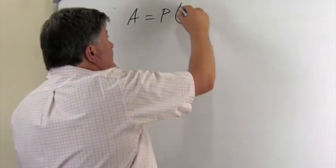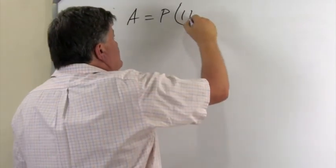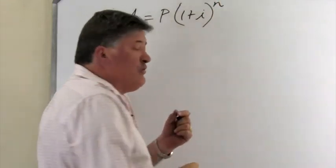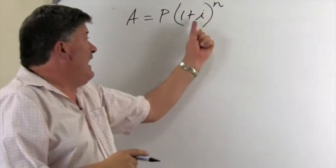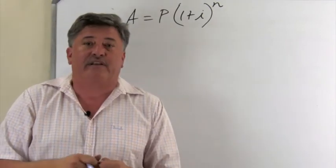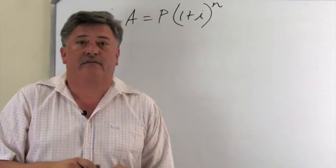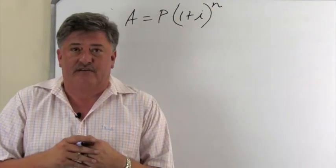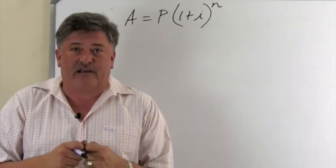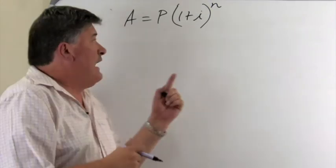Now, you'll remember in simple interest, it was one plus ni. In compound interest, it's one plus i to the power of n. So that i, exactly the same as in simple interest, it is the r divided by the hundred. The n, the number of years. And when I calculate this, it will give me the compound interest on this amount.